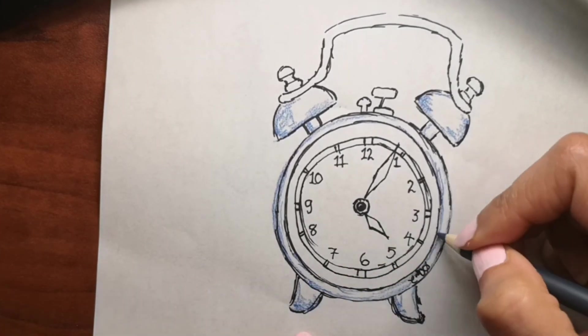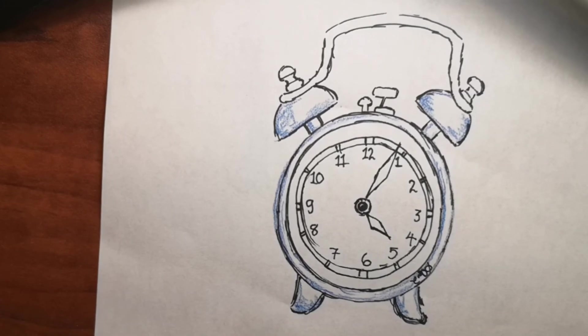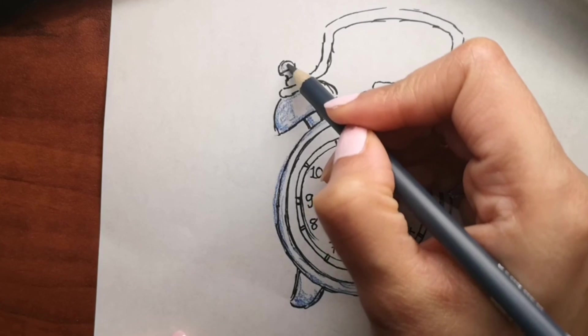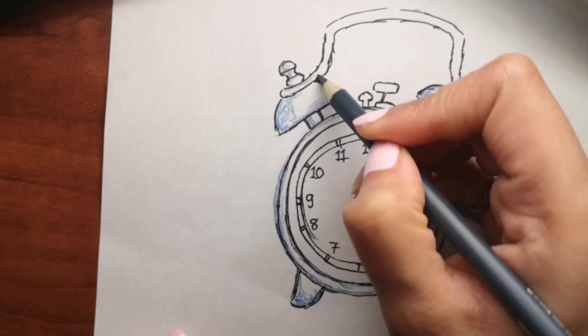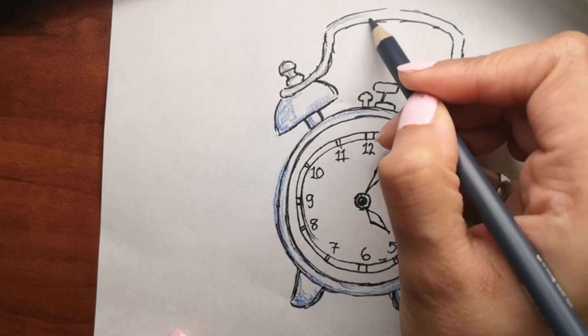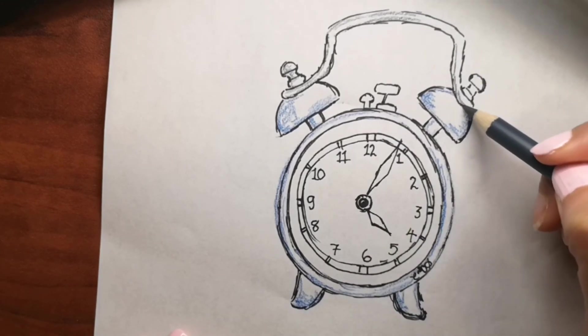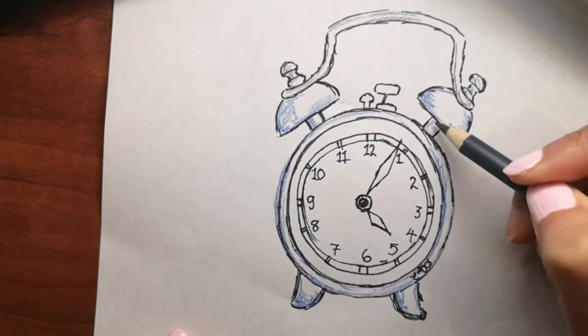To give you more fun facts about clocks in general, due to changes in local gravity, a pendulum clock accurate at sea level will lose around 16 seconds per day if moved to an altitude of 4,000 feet.